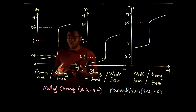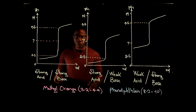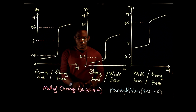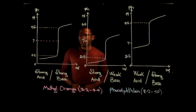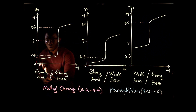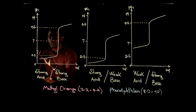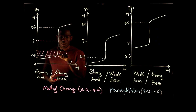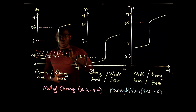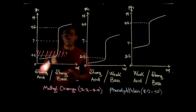So how do we choose the best indicators for this reaction? Methyl orange only works when the pH is within 3.2 and 4.4. Looking at this graph, 3.2 is somewhere around here and 4.4 is somewhere around here. We can see that this range falls within the vertical line, so methyl orange will work in this case.